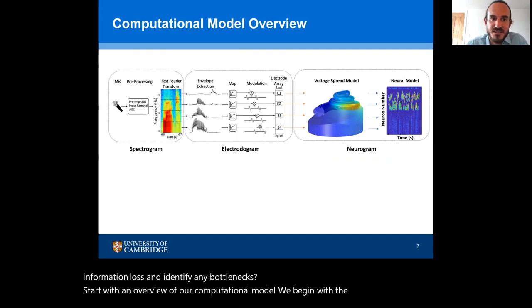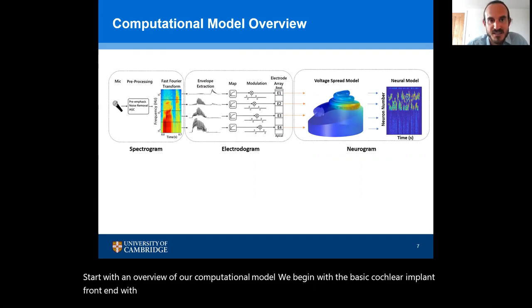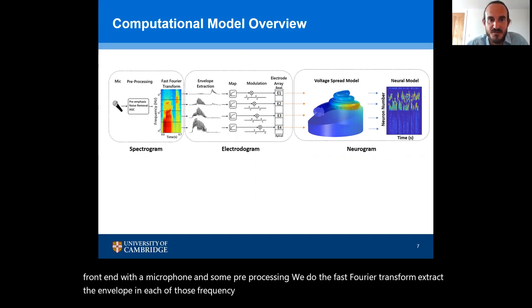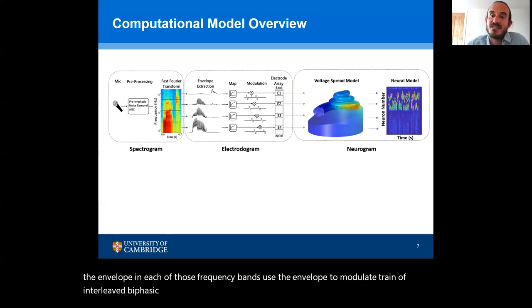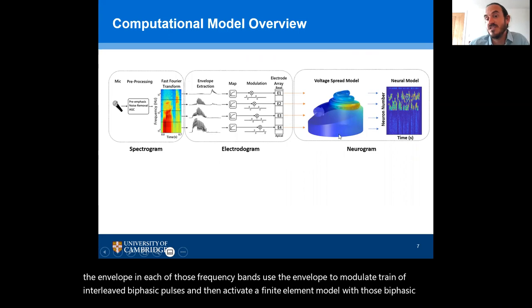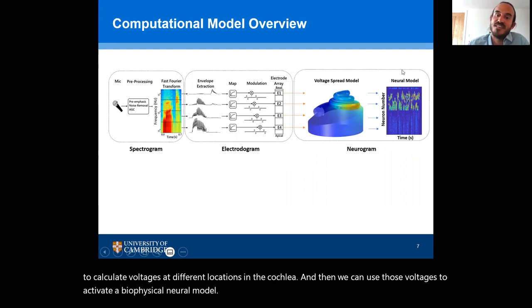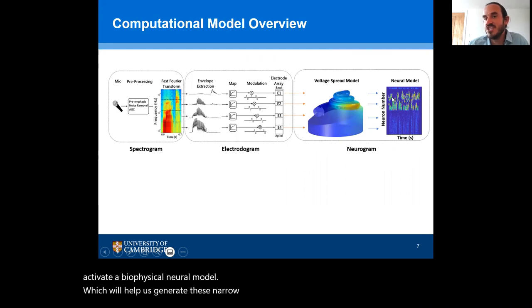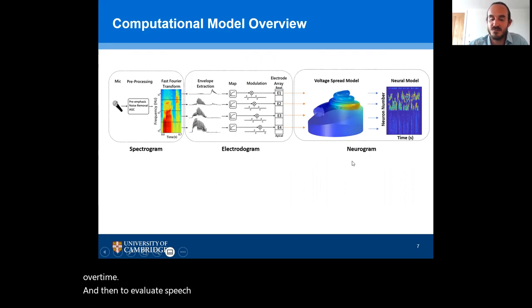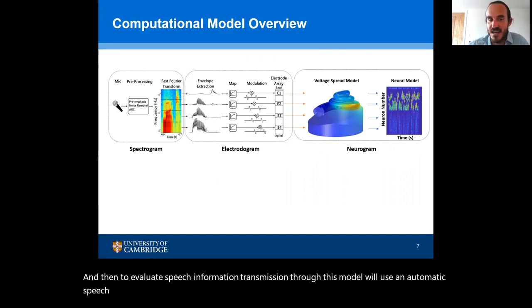We begin with the basic cochlear implant front end with a microphone and some pre-processing. We do the fast Fourier transform, extract the envelope in each of those frequency bands, use the envelope to modulate a train of interleaved biphasic pulses, and then activate a finite element model with those biphasic pulses to calculate voltages at different locations in the cochlea. We can then use those voltages to activate a biophysical neural model to generate neurograms, which show how neural activity changes over time. To evaluate speech information transmission through this model, we use an automatic speech recognition neural network, or ASR.